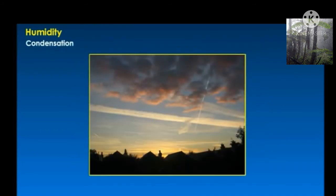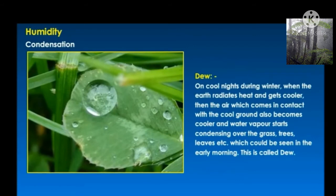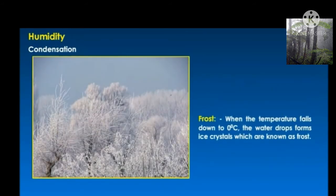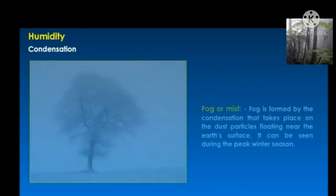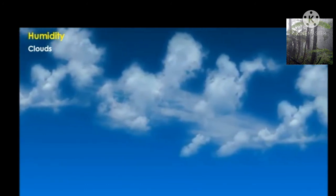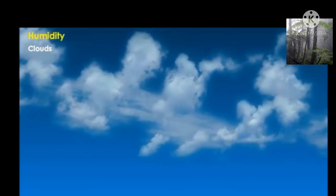Condensation: due to decrease in temperature, the water vapor starts converting into liquid water droplets — this process is called condensation. It has various forms. Dew forms on cold nights during winter when the earth radiates heat and gets cooler, seen in the early morning. When the temperature falls to 0 degrees Celsius, water drops form ice crystals known as frost. Fog is formed by condensation taking place on dust particles floating near the earth's surface and can be seen during peak winter season.